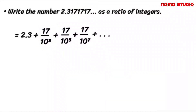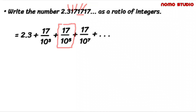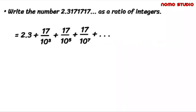Then the next occurrence of 17 is at the first, second, third, fourth, fifth decimal place. So that can be written as 17 over 10 to the power of 5. Following this pattern, we're going to be able to write all occurrences of 17 in the following manner. This portion is what we call an infinite geometric series.